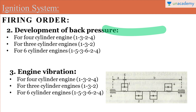To avoid this back pressure problem, similar to the cooling solution, after the 1st cylinder the firing should take place in the 4th or 3rd cylinder in an alternate way. This way the back pressure and back flow problem can be avoided.